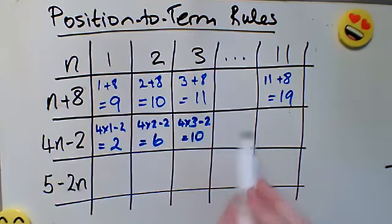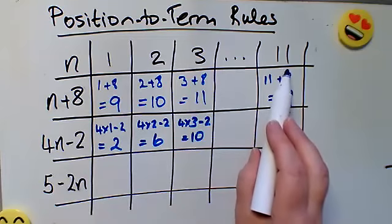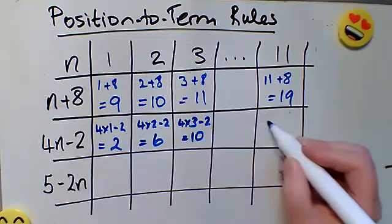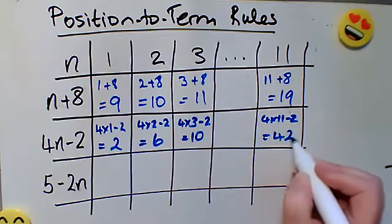Again, I can go right to whichever position in the sequence I'm asked to find. In this case if I want the 11th term in the sequence, 4 times 11 is 44, take away 2 is 42.